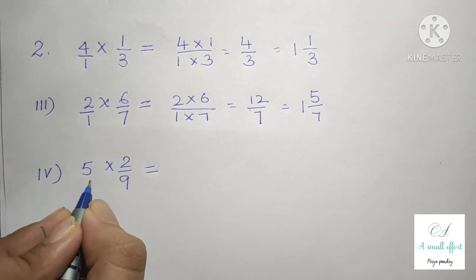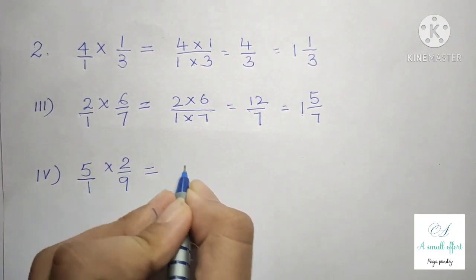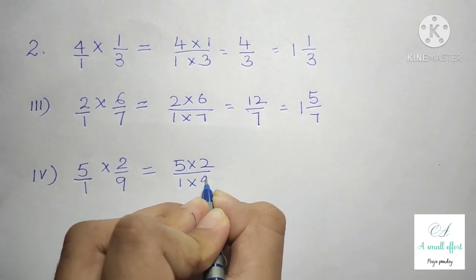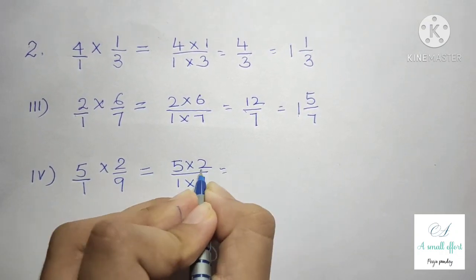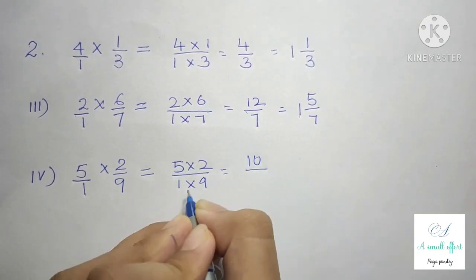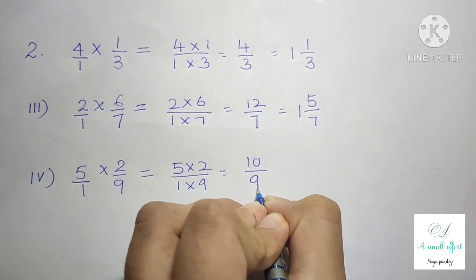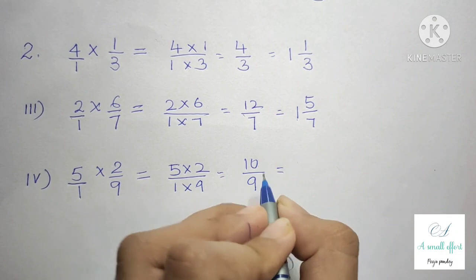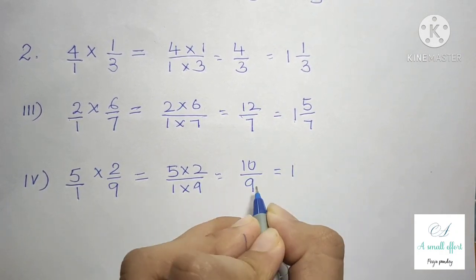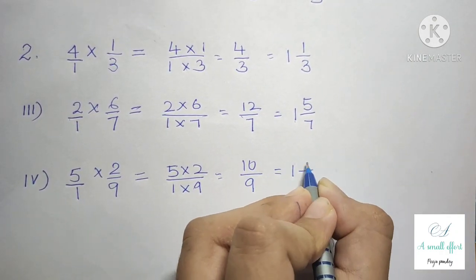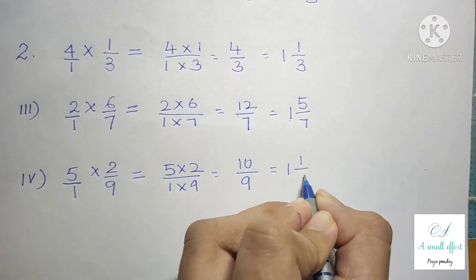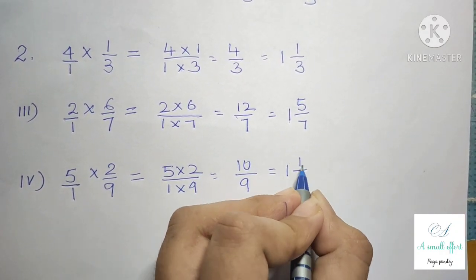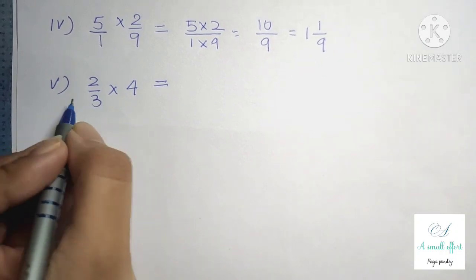Question number 3 part 4 is 5 into 2 by 9. We can write 5 as 5 by 1, multiply numerator with numerator and denominator with denominator, so 5 twos are 10 by 9. It can't be reduced to lowest form, so we write into mixed form: 9 ones are 9, 10 minus 9 is 1, and the denominator is 9. So our answer is 1 whole 1 by 9.